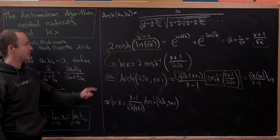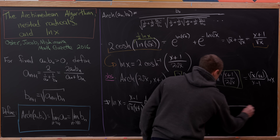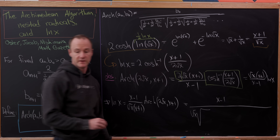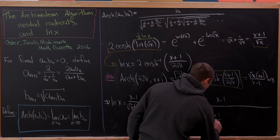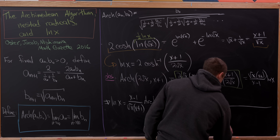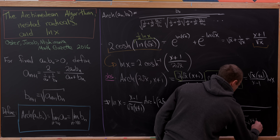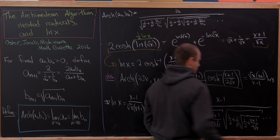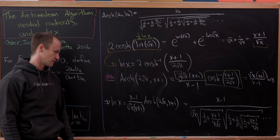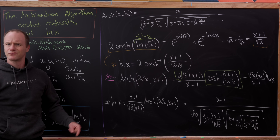Applying the nested radical rule we developed earlier, and after some simplification, we get ln(x) = (x-1) divided by √x times the square root of (1/2 + (x+1)/(4√x)) times the square root of (1/2 + 1/2·sqrt(1/2 + (x+1)/(4√x))) and so on — an infinite product where at each stage the depth of the nesting of the radicals increases. So we've produced an expression for the logarithm involving a really nice infinite product.